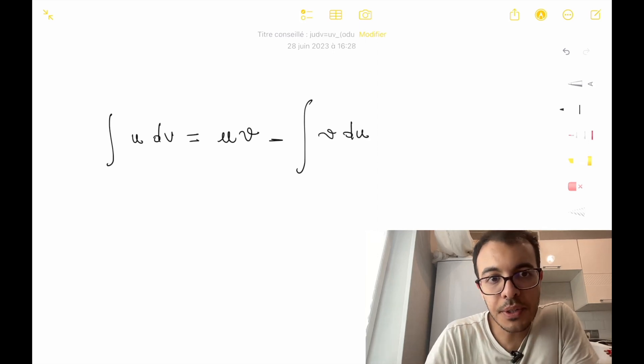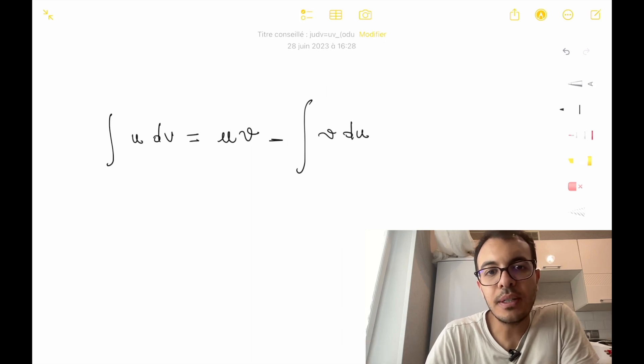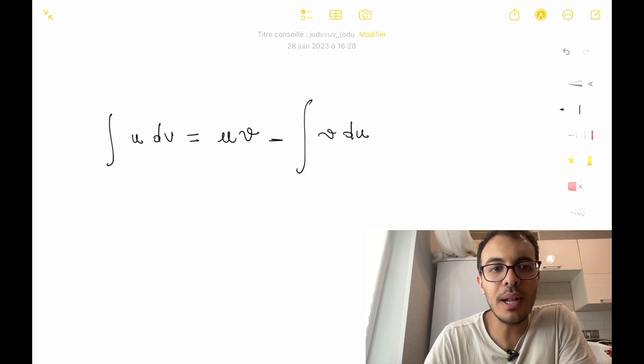Here's how it works. Suppose we have a product of functions u and dv. We select u and dv in such a way that differentiating u simplifies it and integrating dv simplifies it as well.